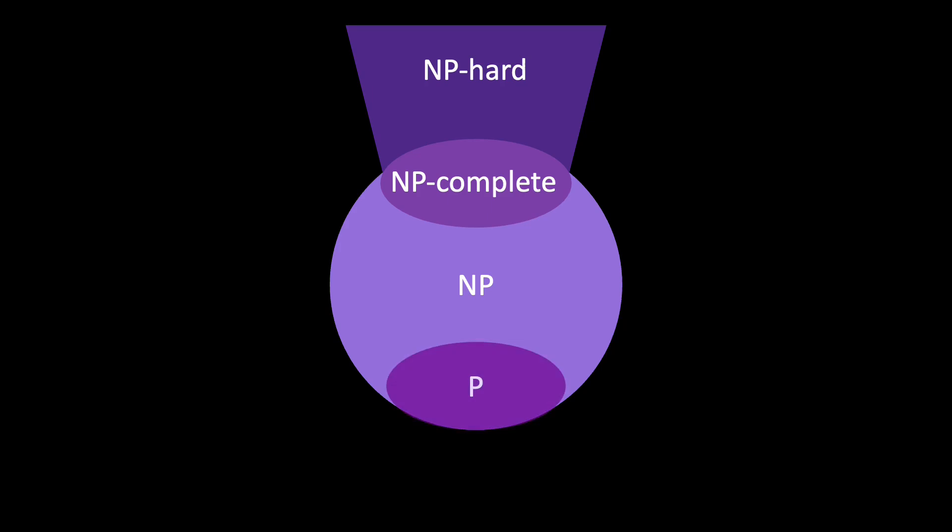We know that both P and NP-complete are subsets of NP. However, it is unknown whether the problems in NP are also a subset of P. After all, just because we have not found polynomial time algorithms for all problems in NP does not mean no such algorithms exist. If NP were to be a subset of P, then the complexity classes P, NP, and NP-complete would equal one another.